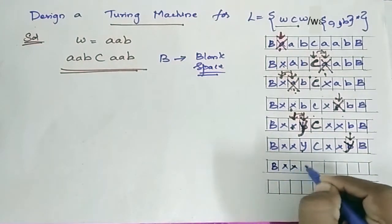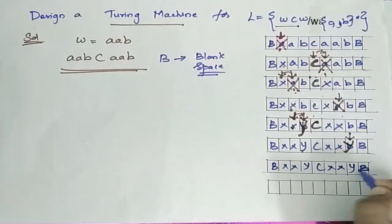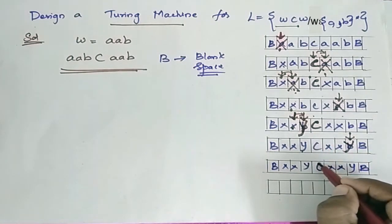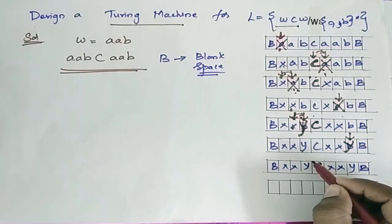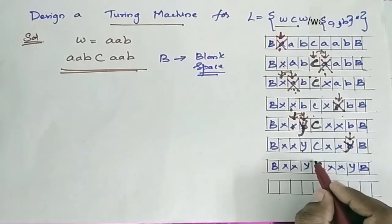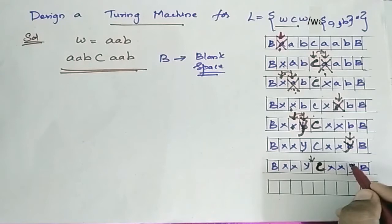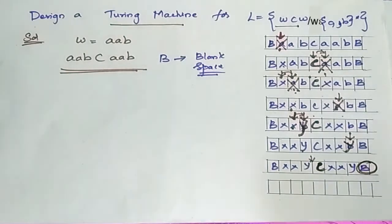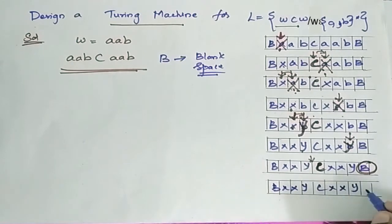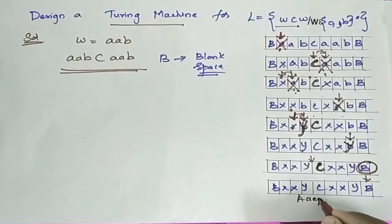After replacing B with Y, the tape header moves left, crosses C, and checks whether it encounters any A or B. If not, it moves right. After passing the Y's, if it encounters a blank space, it means both substrings are the same and the string is accepted.